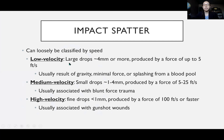We can also classify impact spatter by speed. Low velocity produces large drops around four millimeters or more in diameter, produced by force of up to five feet per second — usually from gravity, minimal force, or splashing from a blood pool. Medium velocity produces smaller drops around one to four millimeters in diameter, produced by five to 25 feet per second, typically associated with blunt force trauma. High velocity produces very fine droplets less than one millimeter, produced by force of 100 feet per second or faster, usually associated with gunshot wounds.